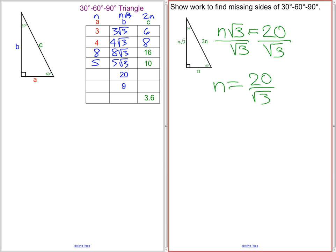Rationalizing the denominator or multiplying it by square root of 3 over square root of 3 gets us to our answer. We now have 20 root 3 over 3.